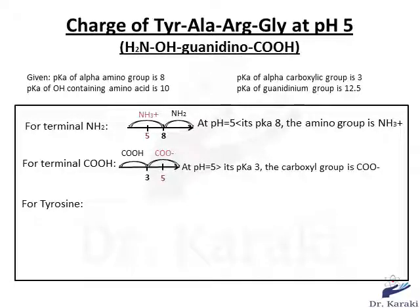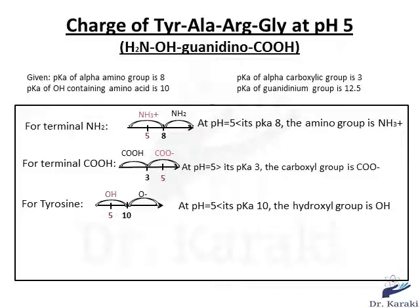For tyrosine, we have the hydroxyl group. We put the pKa of the hydroxyl group, which is 10. On the left side we have the OH, and on the right side the unprotonated form O-. Since 5 is lower than 10, the hydroxyl is OH.